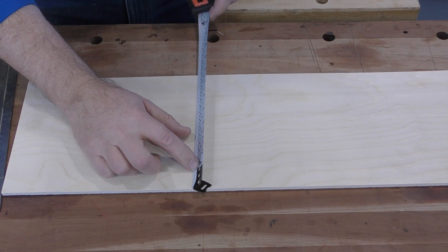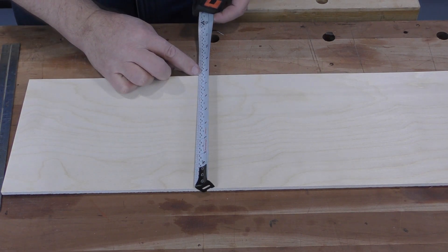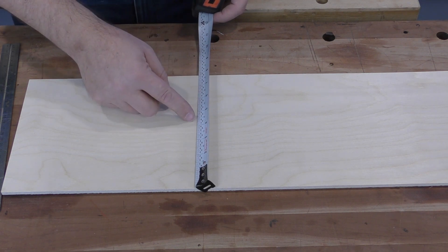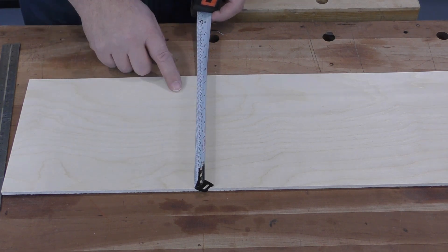So if we measure this, we're at about 7 and 3 quarters. Now I could do the math. Let's see, it would be 3 and a half plus 3 eighths, so 3 and 7 eighths should be about the center point.